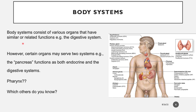Body systems consist of various organs that have similar or related functions. The organs which are related and serve a particular or similar purpose come together like a communal labor to form body systems. An example is the digestive system — in the digestive system, you have organs like the liver, the gallbladder, the intestines, the oral cavity, the tongue, the teeth, all helping to achieve digestion.